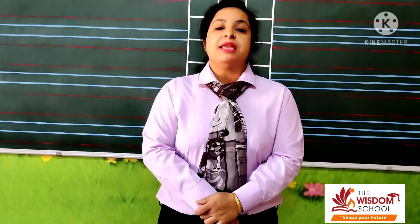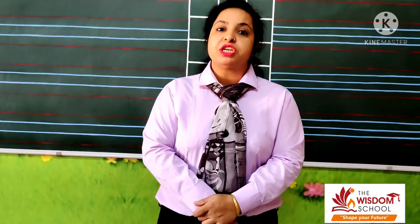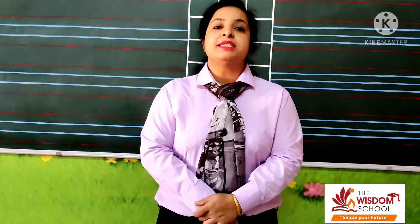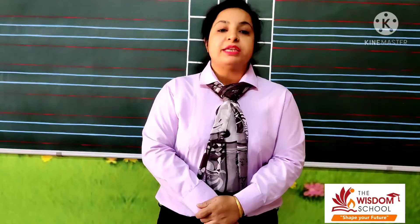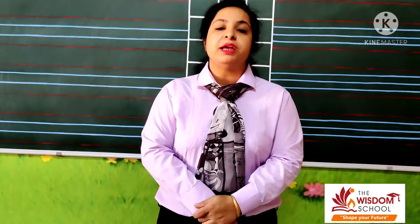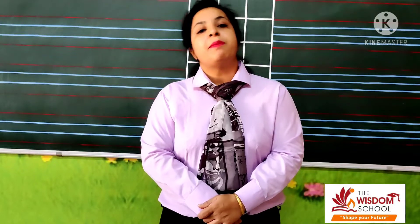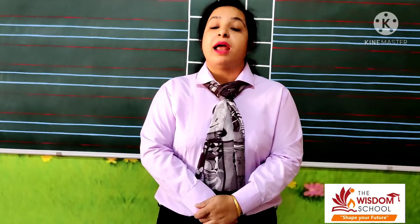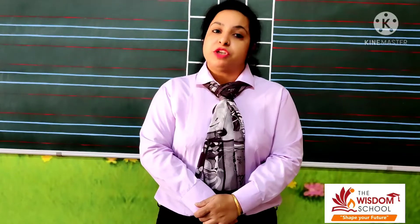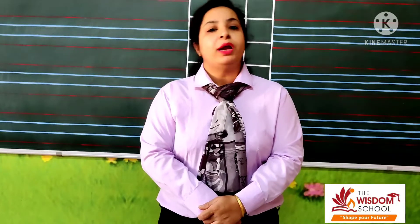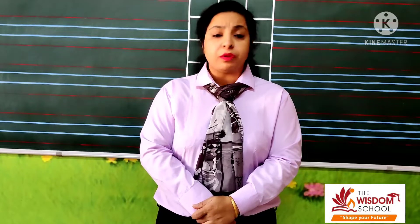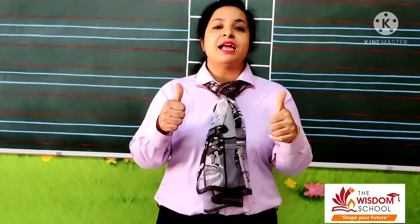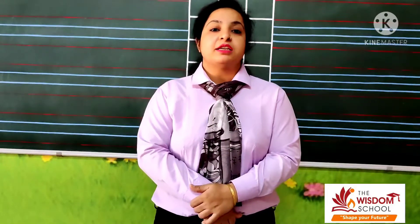But we start karle se pehle some basic things, jo aapko pata honi chahiye. Like, what is the date today? Today is 26. And what day is today? Today is Monday. Which month is going on? April month is going on. Which year is going on? 2021 is going on. So now rhyme time. Shall we start? Let's start.